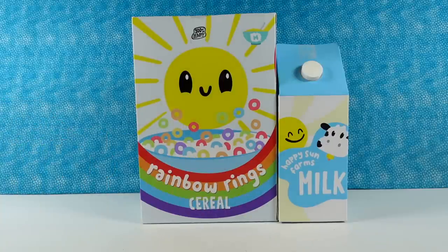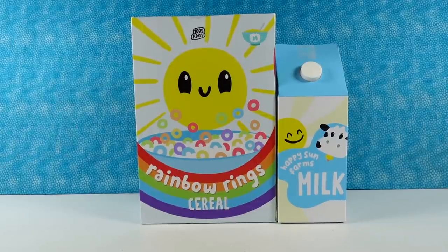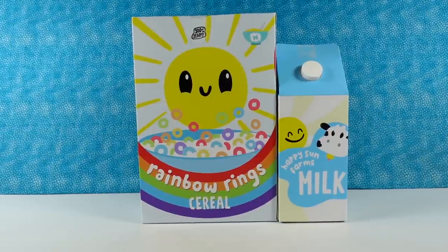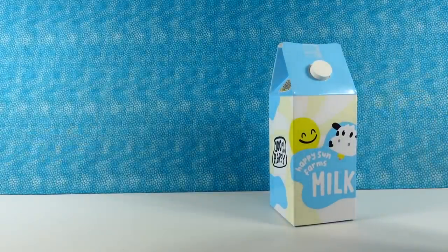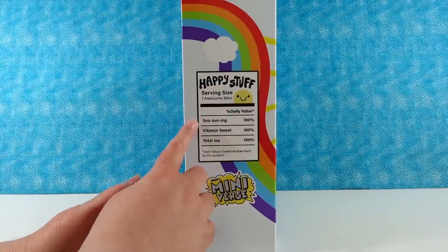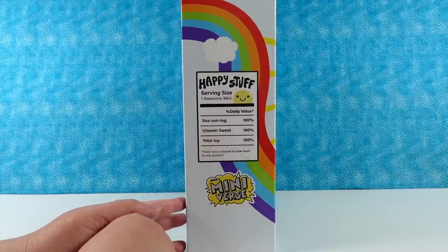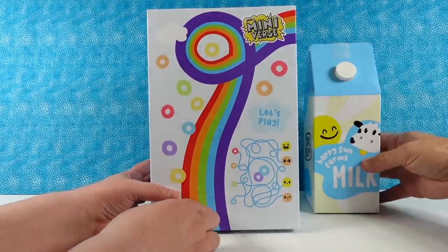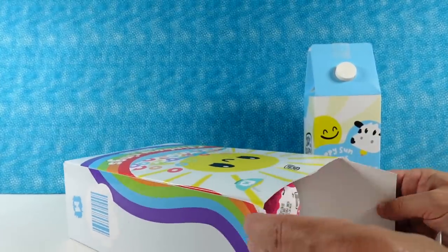Oh, my goodness. That's so cute. Cereal box. Rainbow Rings cereal. Oh, and milk. And milk. Happy Sun Farms milk. I want to set that up, because I want to take a screenshot of that for you guys for the thumbnail, because that's actually pretty darn cute. This is going to be Rainbow Rings cereal and Happy Sun Farms milk from the mini-verse. This is not real food. These are going to be some sort of collectible somethings.